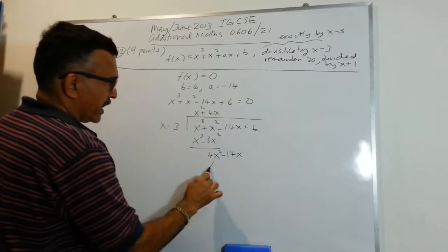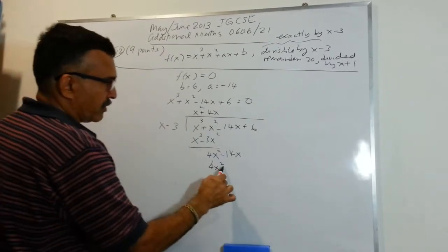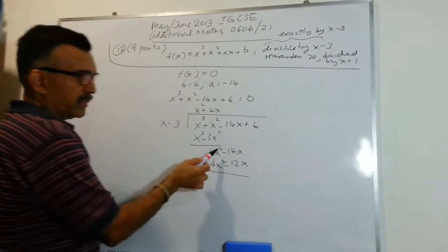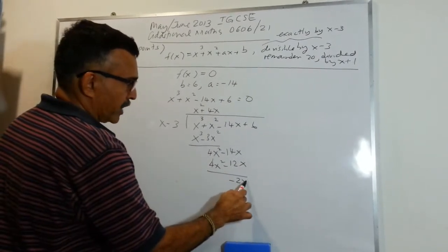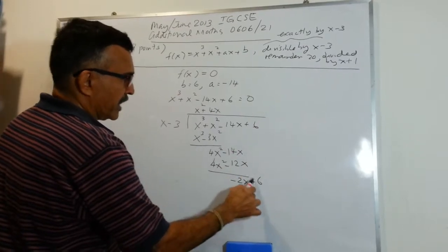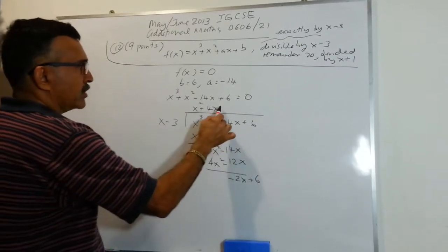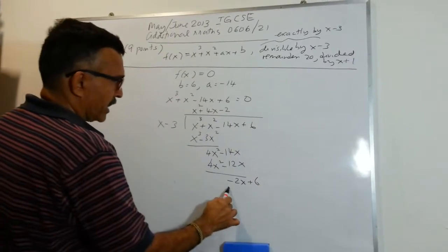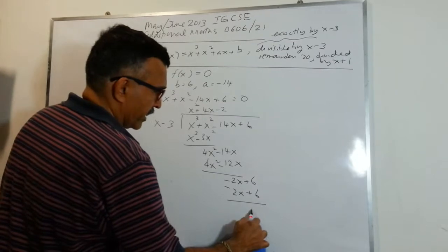4x times x gives 4x squared; 4x times minus 3 gives minus 12x. Take this line minus this line, we get minus 2x. Bring down the 6. Take minus 2x and divide by x, you will get minus 2, and we will get minus 2x plus 6, and we are done.